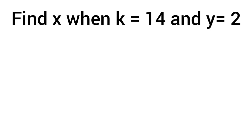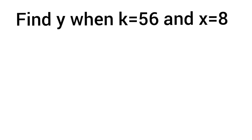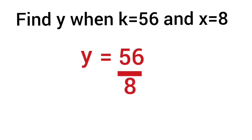For the next number, find x when k equals 14 and y equals 2. Since x is unknown, we divide k by y: 14 divided by 2 equals 7, so x equals 7. Next, find y when k equals 56 and x equals 8. Since y is unknown, we divide k by x: 56 divided by 8 equals 7, so y equals 7.